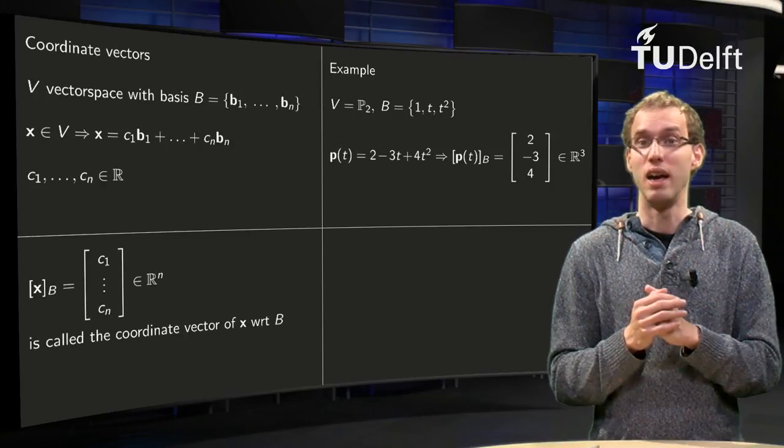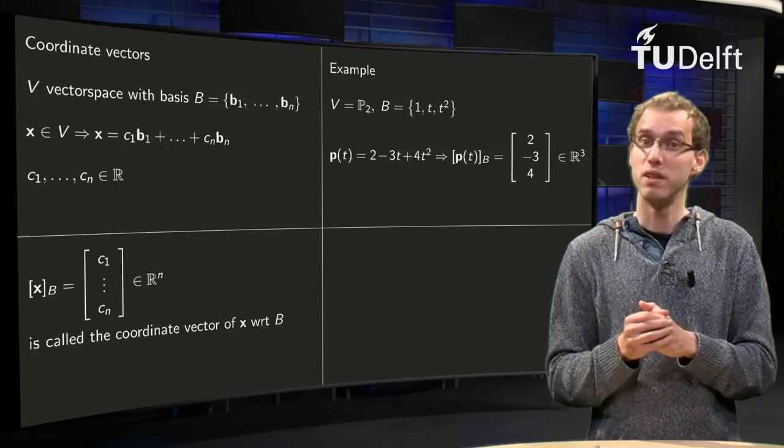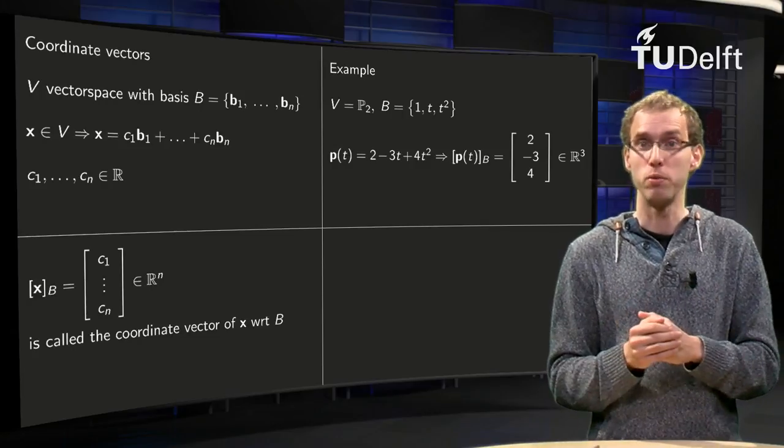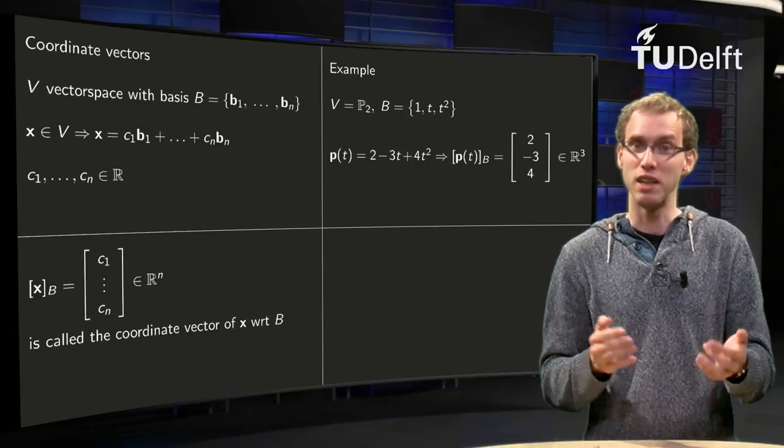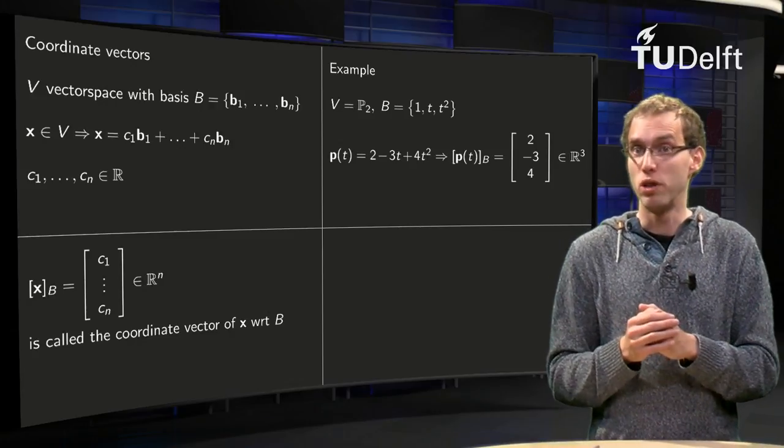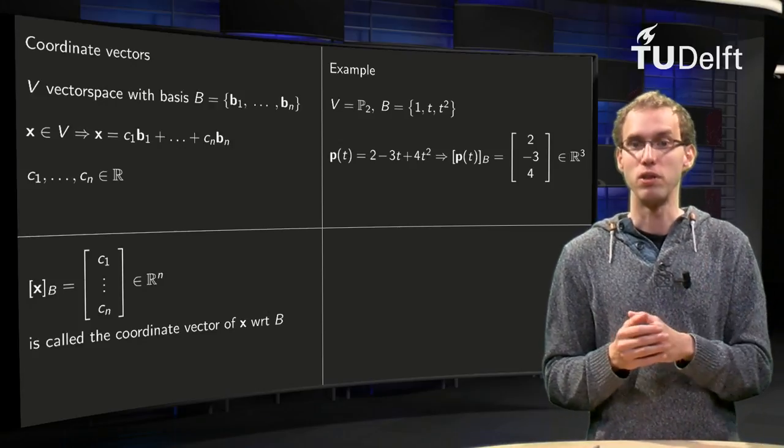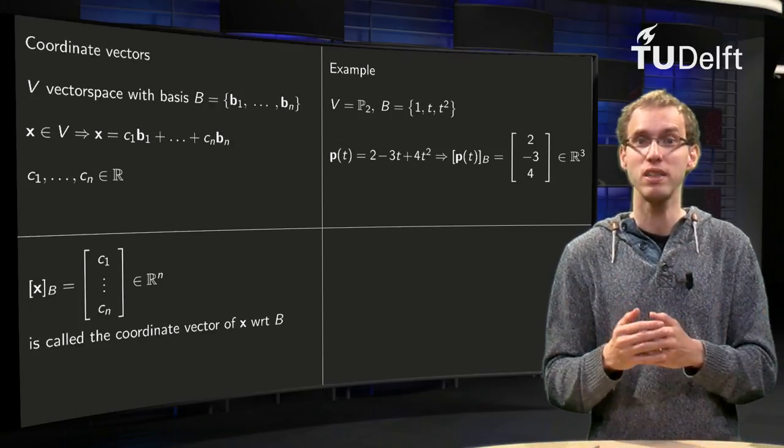If I have an easy basis, like when we pick V vector space equals P2, the polynomials up to degree 2 and the standard basis 1, t, t squared, then it is really easy to see what the coordinate vector is. So if I have a polynomial, for example, 2 - 3t + 4t², what will be the coordinate vector?